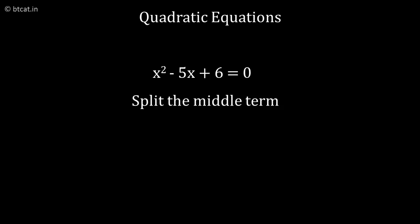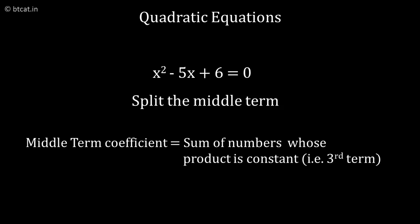One method is called splitting the middle term method. We try to write the middle term as the sum of two numbers whose product is equal to the constant as well as the coefficient of x².